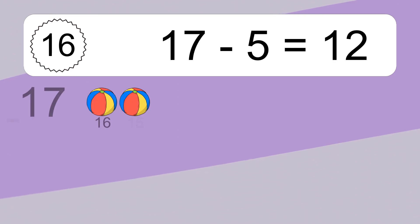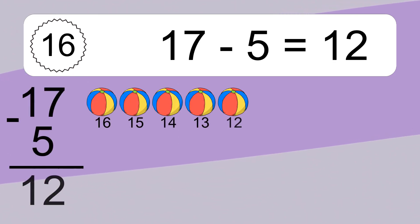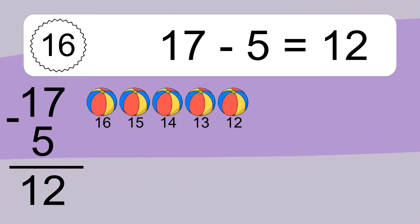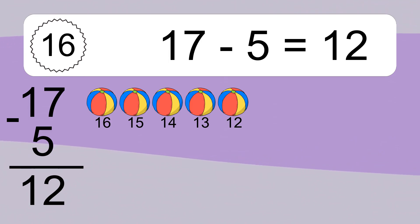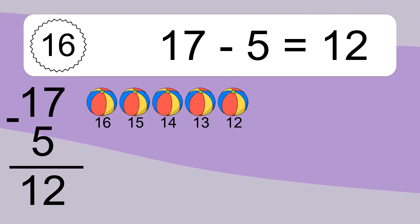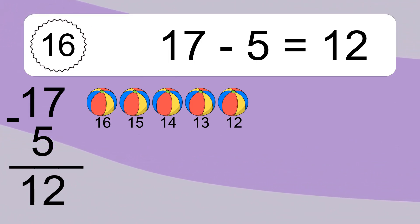Eleven. Seventeen minus five equals twelve. Let's count it: sixteen, fifteen, fourteen, thirteen, twelve.